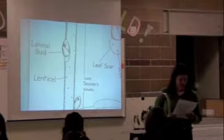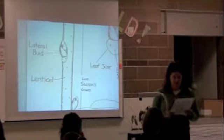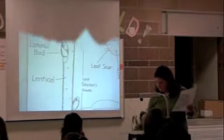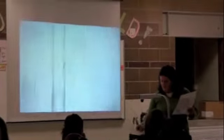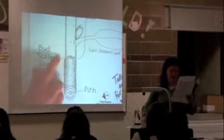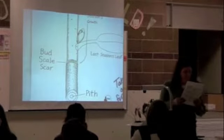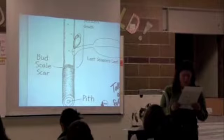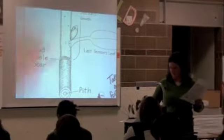Do you see a few inches from the tip of your twig several lines or rings close together? Those are the growth rings, also called the bud scale scar. They basically show the growth from one year to the next.